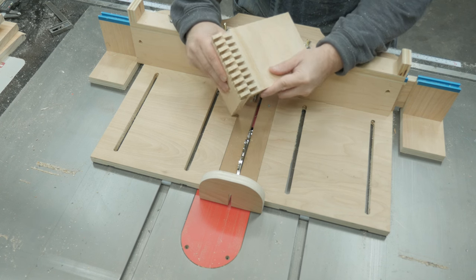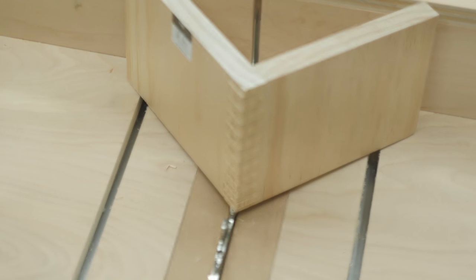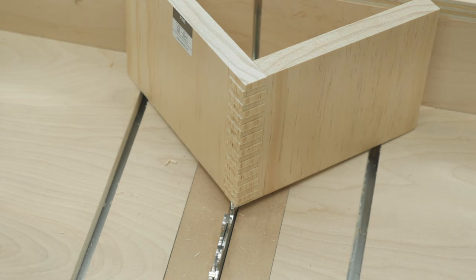Your joint should be perfect every time. If you do need to make an adjustment though, all you do is add or remove a shim from your dado set. You shouldn't have to do anything to the jig. It's that simple.